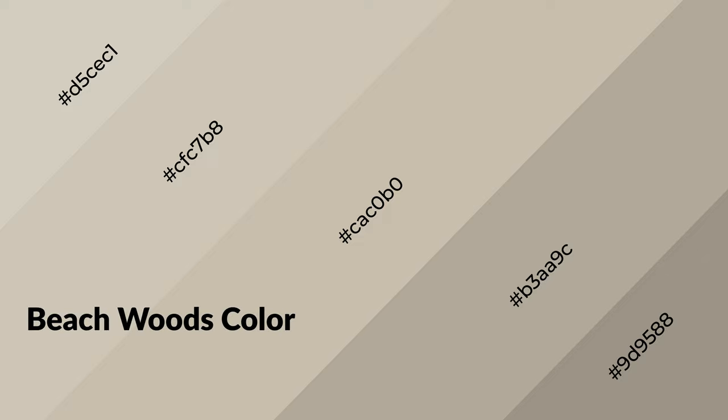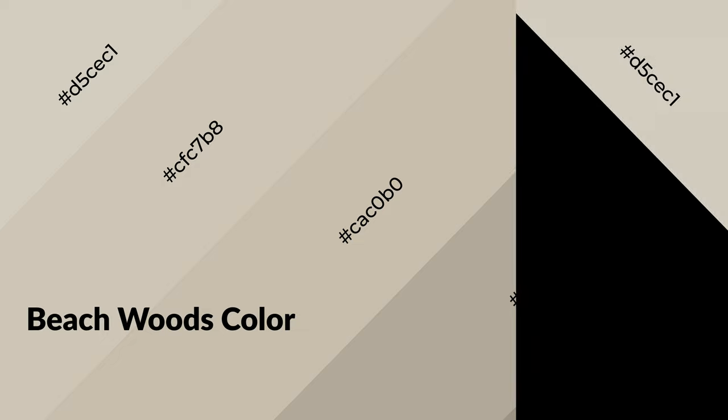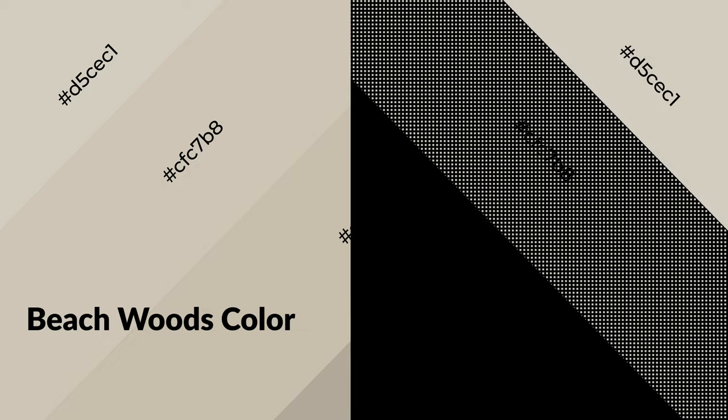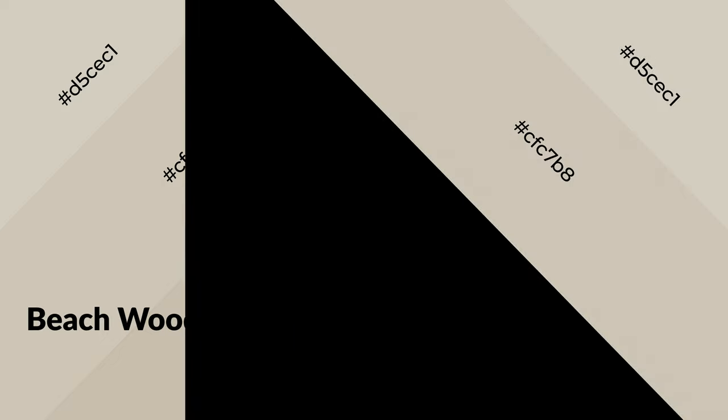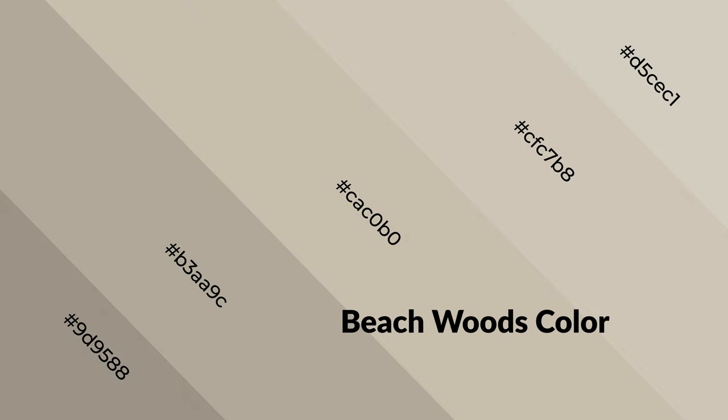Beech Woods is a warm color and it emits cozier and active emotions. Warm colors are symbols of warmth, fire, heat, and sunshine. It also evokes joy, passion, love, and even anger. You can see them used in restaurants and gyms.